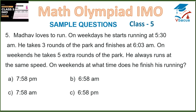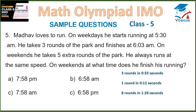Question 5: Madhav loves to run. On weekdays, he starts running at 5:30 am, takes 3 rounds of the park and finishes at 6:03 am. On weekends, he takes 5 extra rounds of the park and always runs at the same speed. 3 rounds take 33 minutes, so 1 round takes 11 minutes. 8 rounds will take 1 hour 28 minutes. Adding 1 hour 28 minutes to 5:30 am gives 6:58 am, which is in option B.